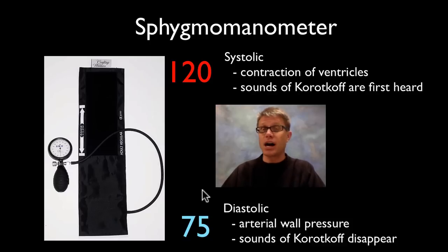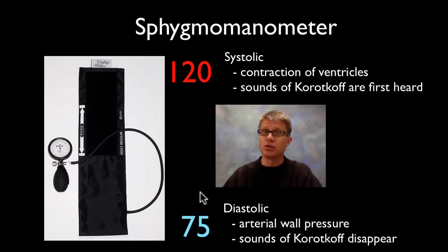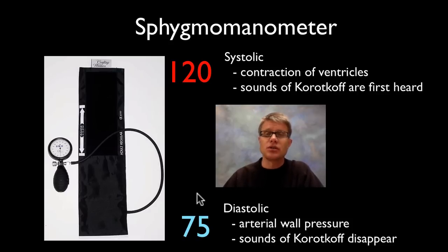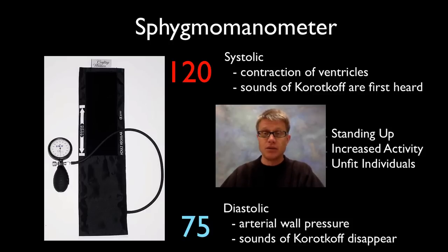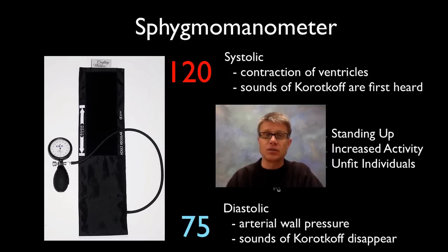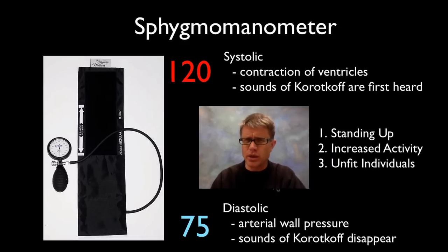Blood pressure that is really, really high is an indicator that you could have something blocking the vessels. If it's really, really low, it could be an injury or going into some form of stress. So it's a quick way to measure the health of an individual — it's always the first thing they do when I go to the doctor. Things that could affect it: if you were to stand up, that's going to increase blood pressure. If you exercise and you're unfit, that's going to increase blood pressure as well. All of these things we can measure using a sphygmomanometer, which is measuring the pressure within the vessels.